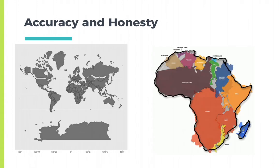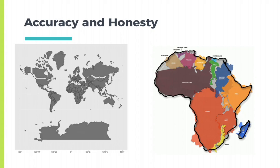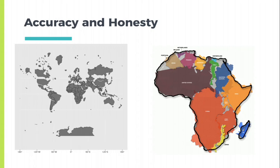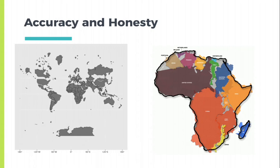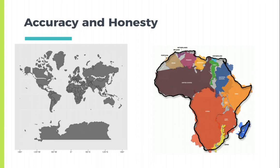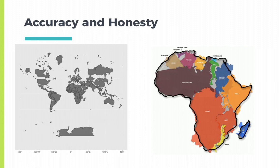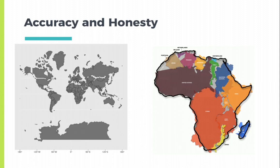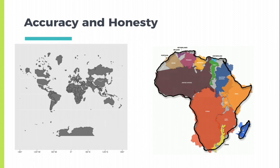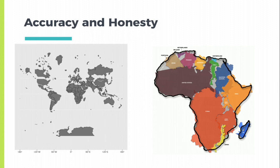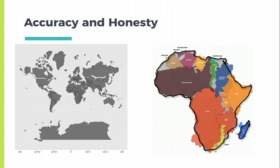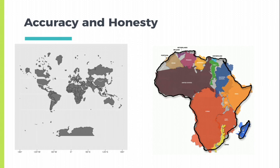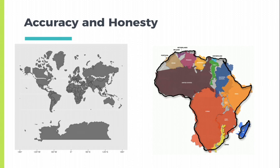Land masses such as Australia and Indonesia appear much smaller than they actually are. Africa appears much smaller than it actually is in comparison to other land masses — as you can see from the graphic on the right, many countries can actually fit neatly within Africa. And this tends to look a little bit, well, racist.